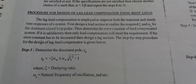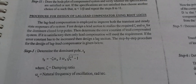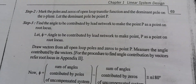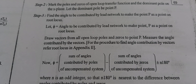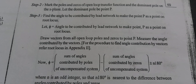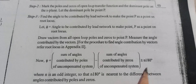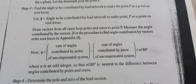The first step in the lead procedure is to identify the dominant pole. The second step is to mark the poles and zeros. The third step is the angle contribution, which is the sum of the angles of poles minus the sum of the angles of zeros, plus or minus N times 180 degrees.